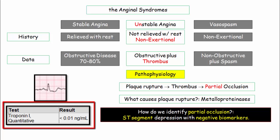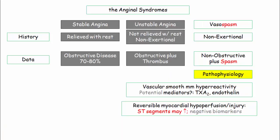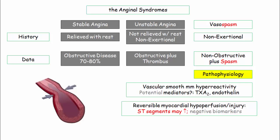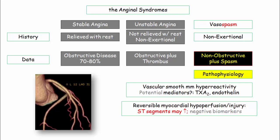For vasospastic disease, the pathophysiology is vascular smooth muscle hyperreactivity. Although mediators such as thromboxane A2 and endothelin are suggested, there isn't a direct cause-and-effect relationship — these are known vasoconstrictors and vasoconstriction is the pathophysiologic mechanism. Vasospastic disease is characterized by elevation of ST segments, which can be captured on ambulatory EKG monitoring. In patients with protracted vasospasm, myocardial injury may occur, so elevation of biomarkers might be reported.